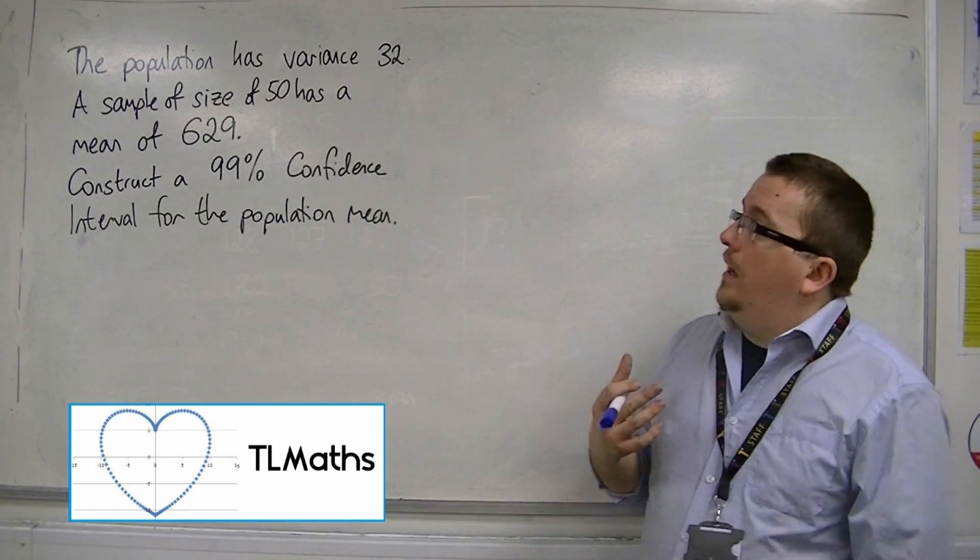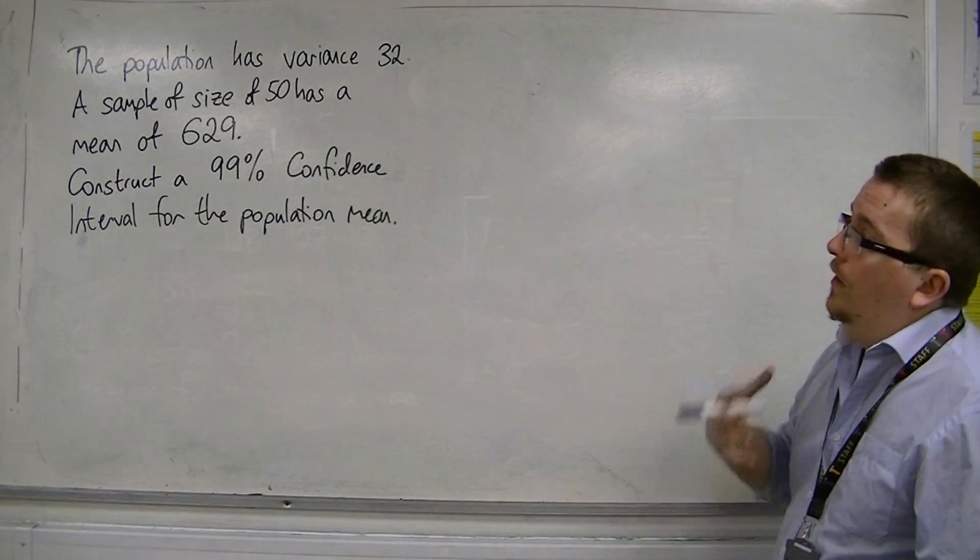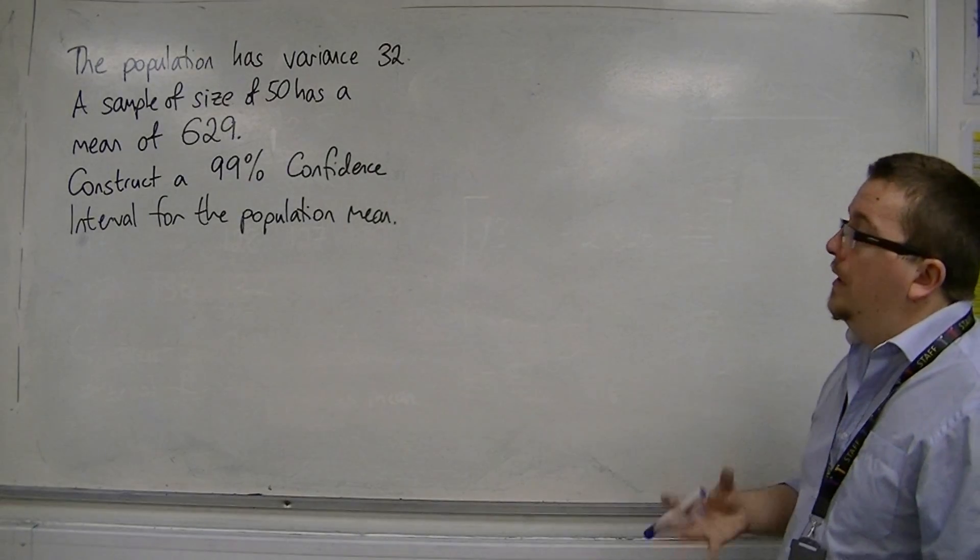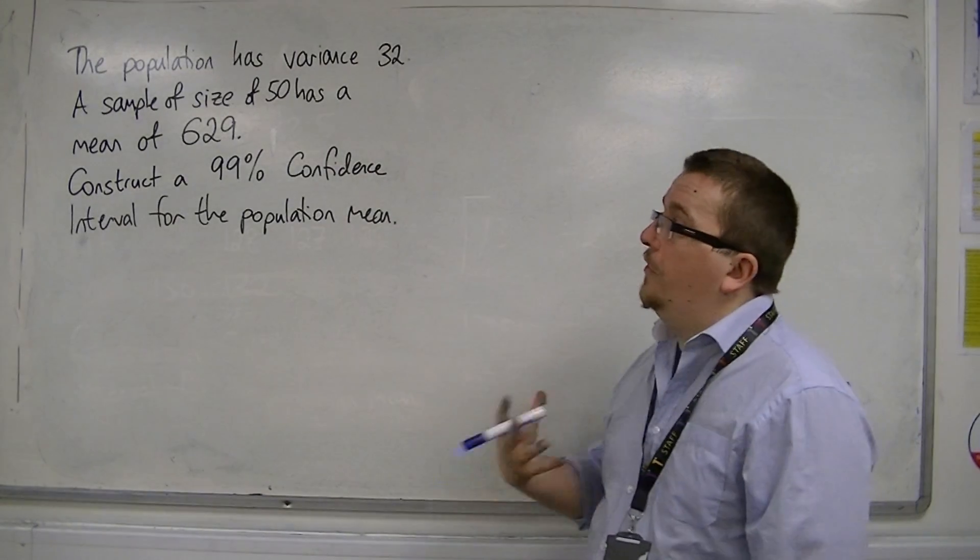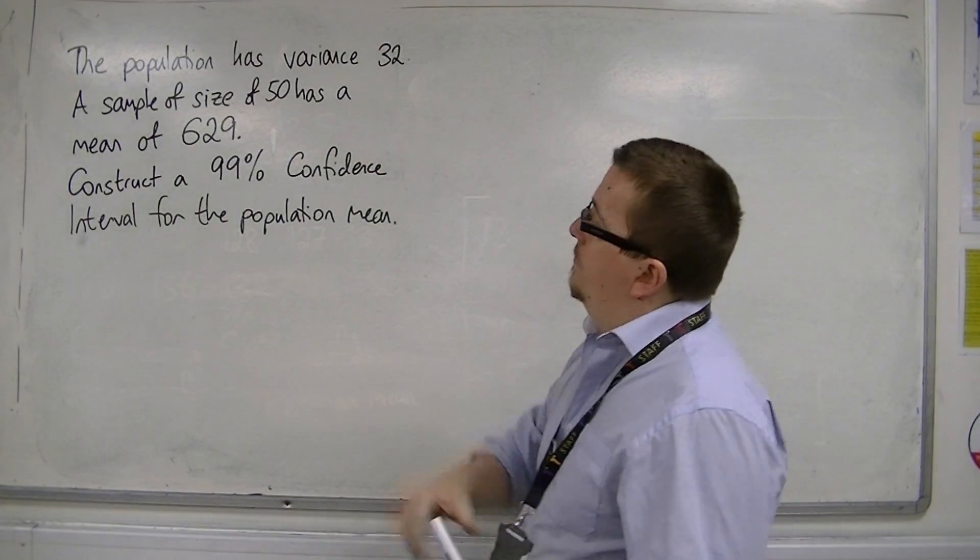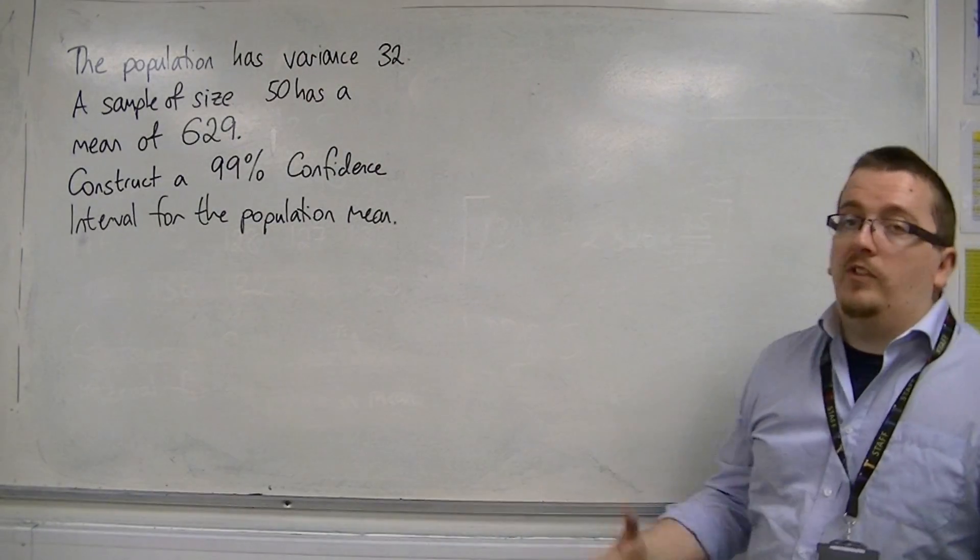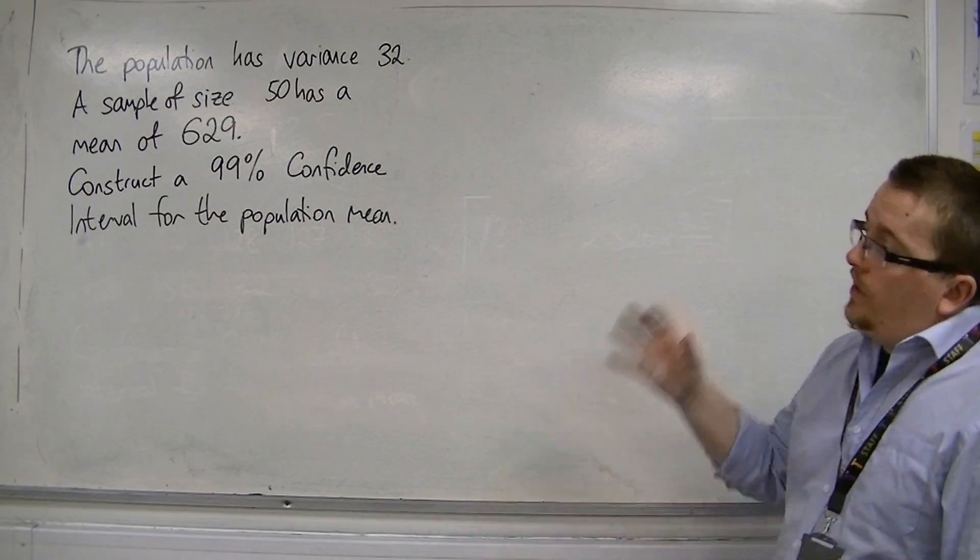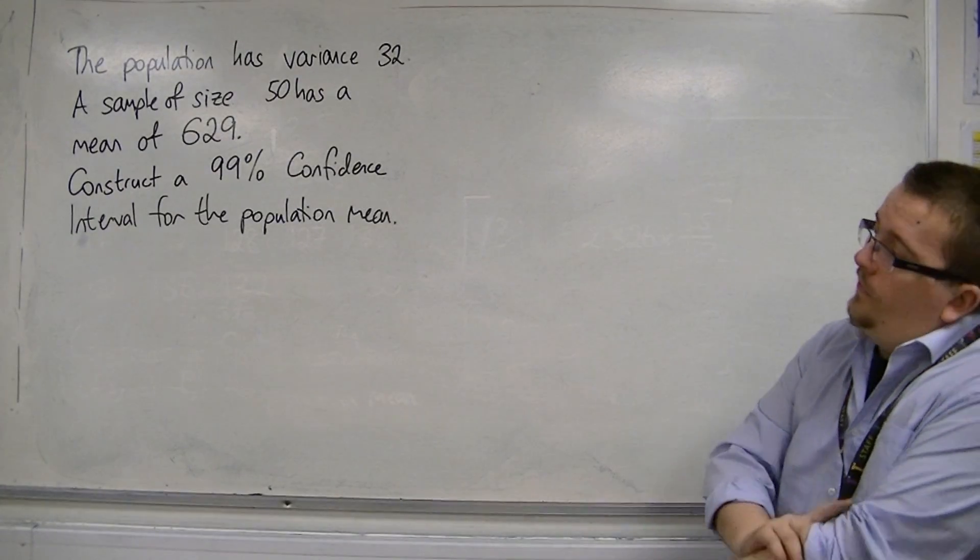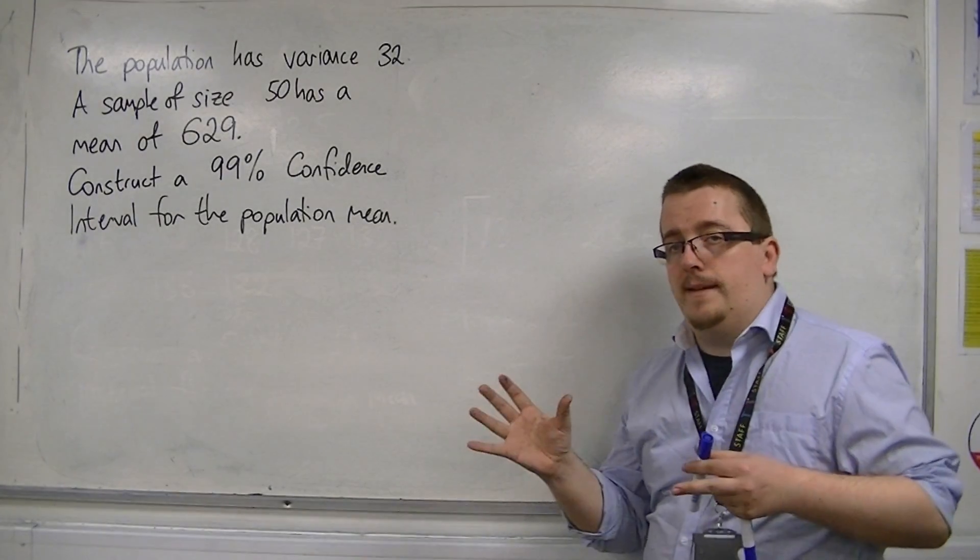In this example, we know that the population has a variance of 32, and we have a sample of size 50 has a mean of 629. We want to construct a 99% confidence interval for the population mean.